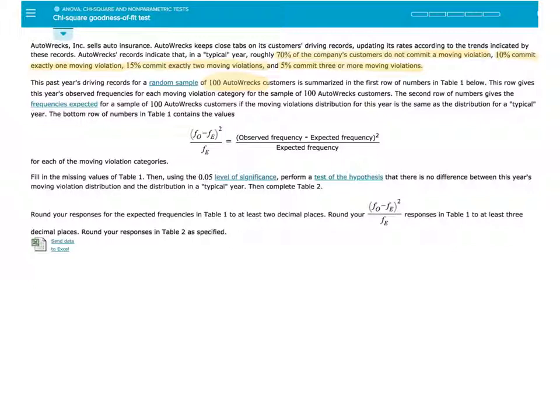Fill in the missing values in Table 1. Then, using the 5% level of significance, perform a test of the hypothesis that there is no difference between this year's moving violation distribution and the distribution in a typical year. Then complete Table 2. Round expected frequencies to at least two decimal places, and round (Fo − Fe)²/Fe responses to at least three decimal places. Round responses in Table 2 as specified.